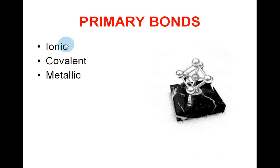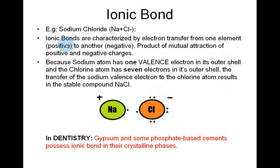Primary bonds can be ionic, covalent, and metallic. Ionic bonds — for example, sodium chloride — are characterized by electron transfer from one element (positive) to another (negative). It's a product of mutual attraction of positive and negative charges. Because sodium has one valence electron and chlorine has seven, the transfer results in the stable compound NaCl. In dentistry, gypsum and some phosphate-based cements possess ionic bonds in their crystalline phases.